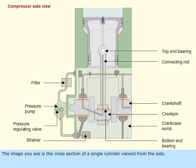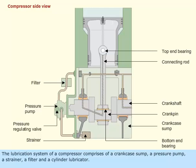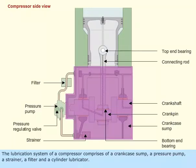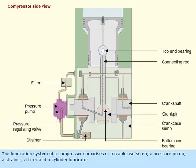The image you see is the cross section of a single cylinder viewed from the side. The lubrication system of a compressor comprises of a crank case sump, a pressure pump, a strainer, a filter, and a cylinder lubricator.